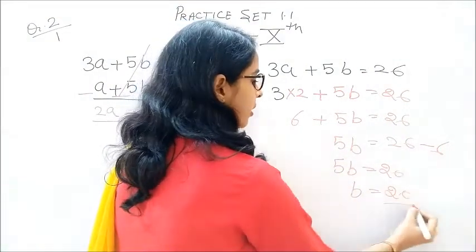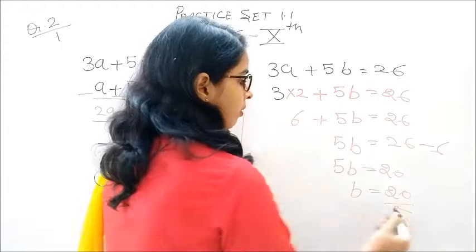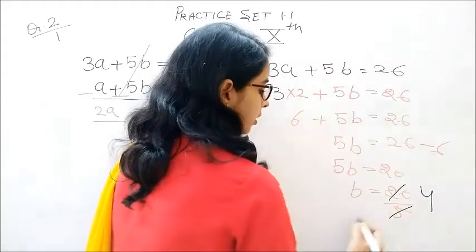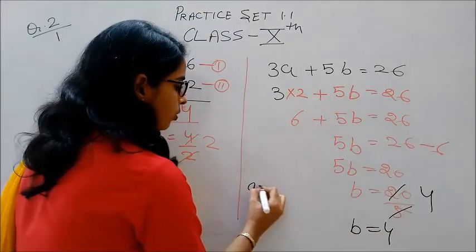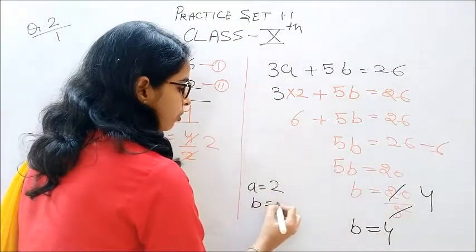b is equal to 20 divided by 5. 5 fives are 20. b is equal to 4. a is equal to 2, b is equal to 4.